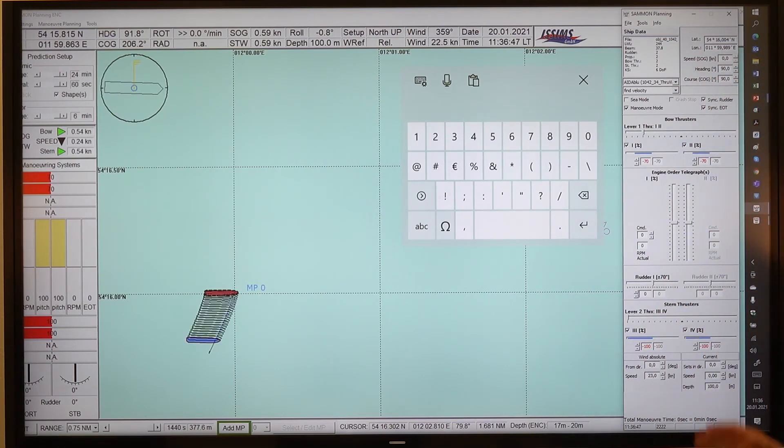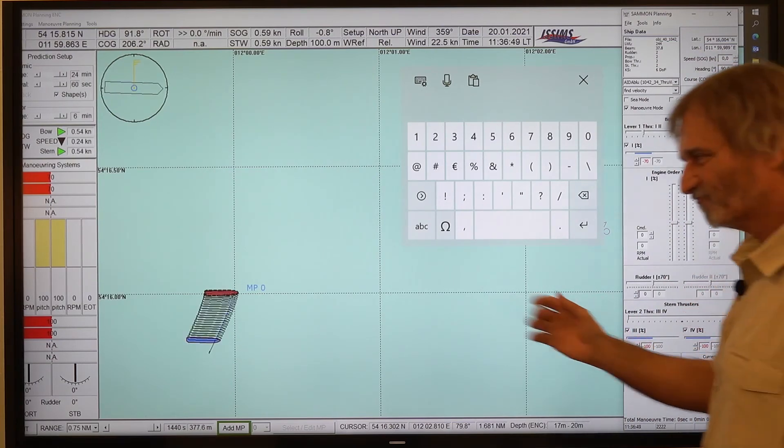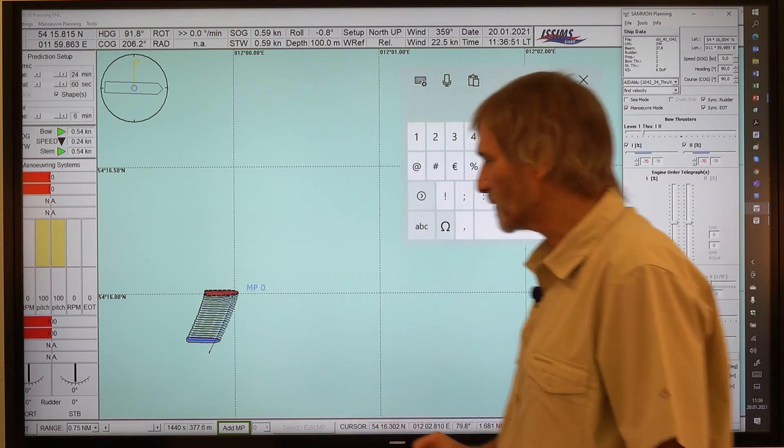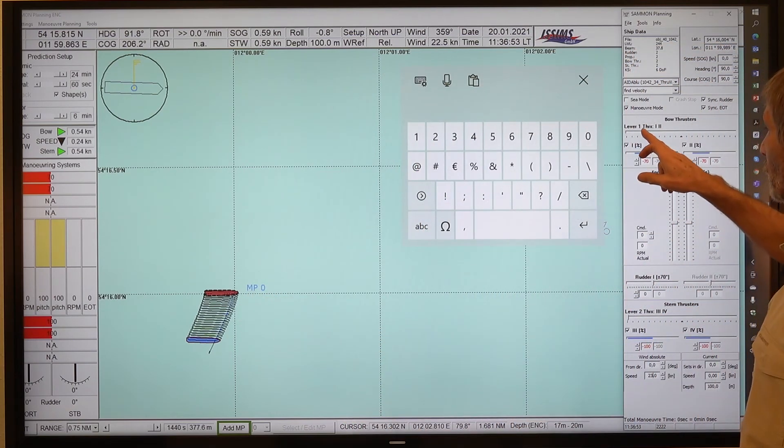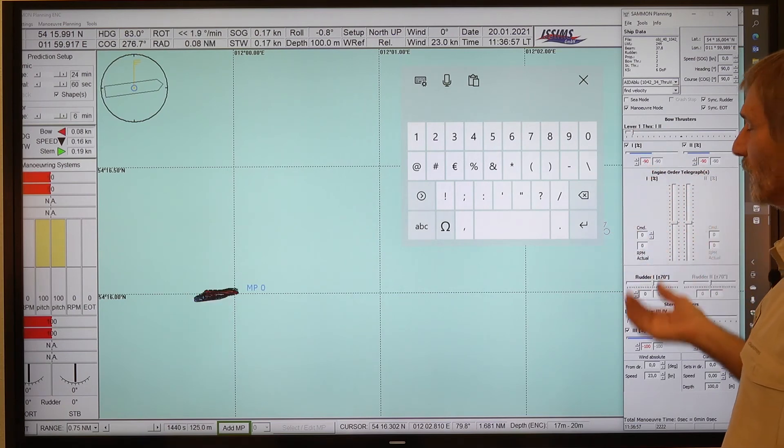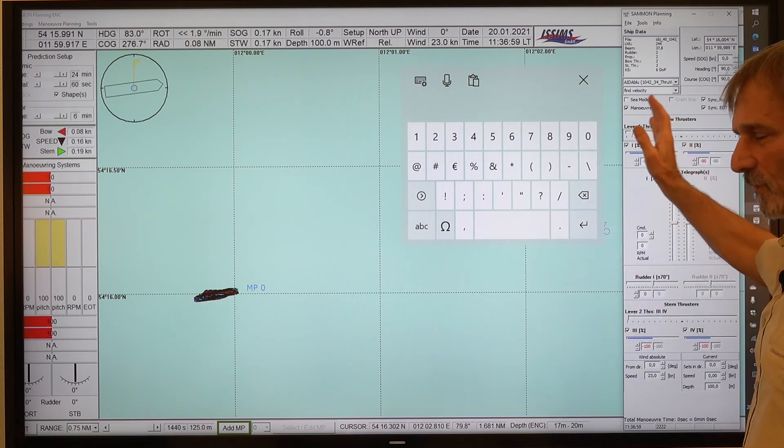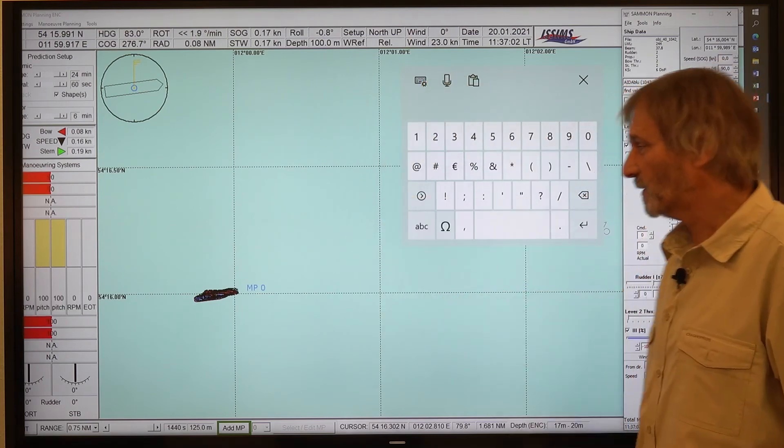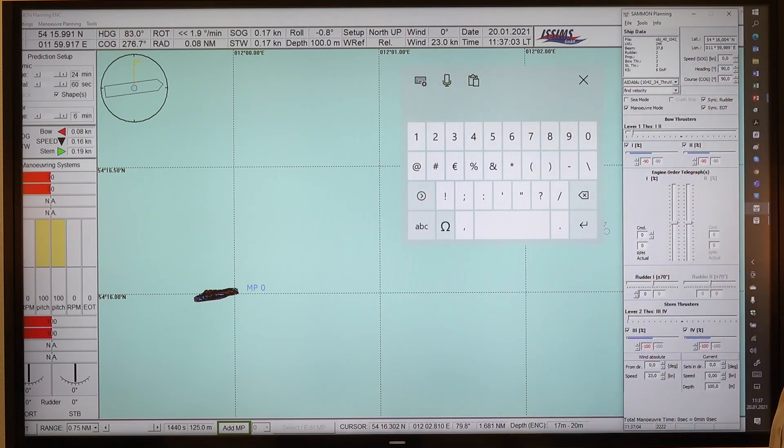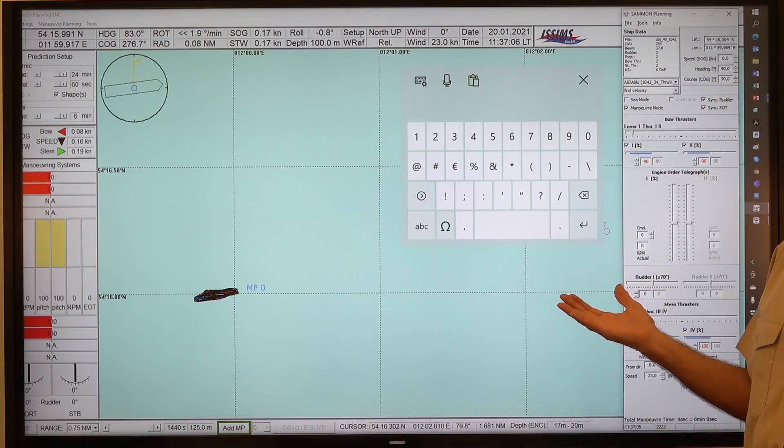And then we see, this is a little bit not really balanced. But we could use our thrusters to move the bow up. And then we see, we have seen that the bow is a little bit faster going. So we could balance this wind speed.